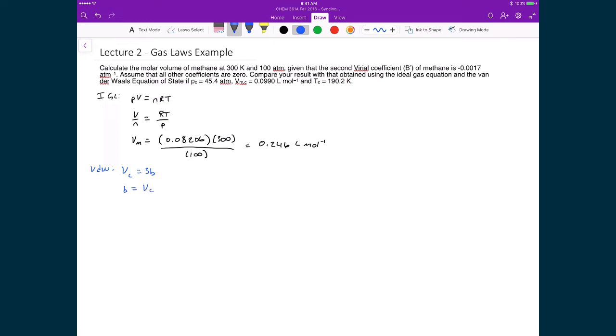And so then if I solve for B, then that's just equal to VC divided by 3. I can then substitute in for VC, which is 0.0990 divided by 3, which means that my B is equal to 0.0330.